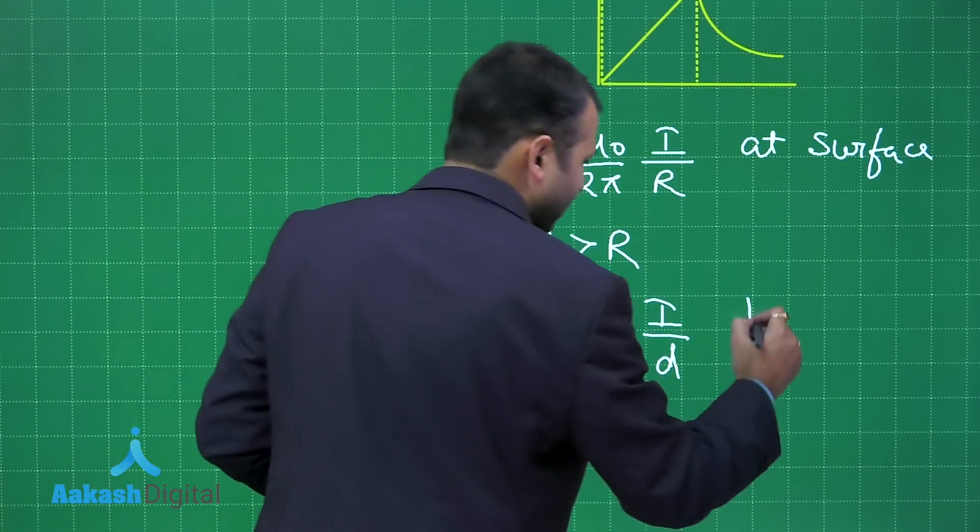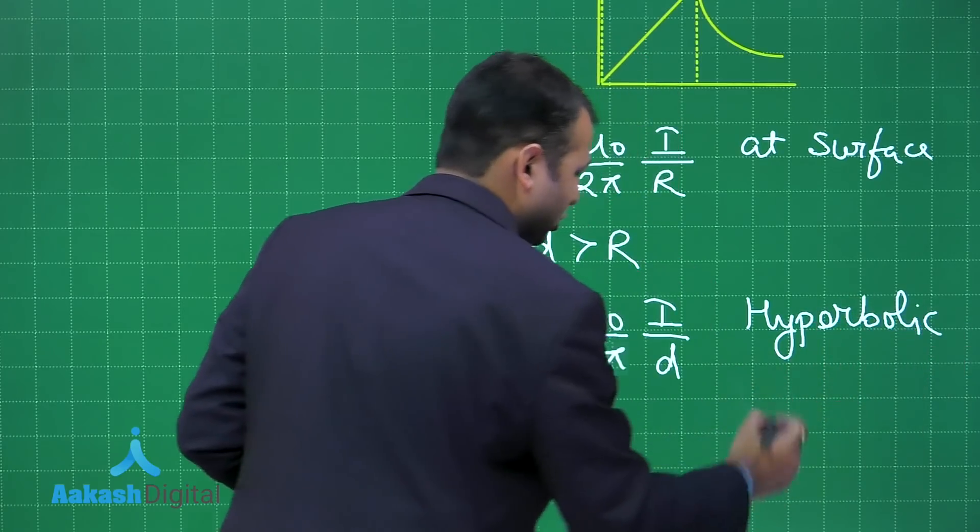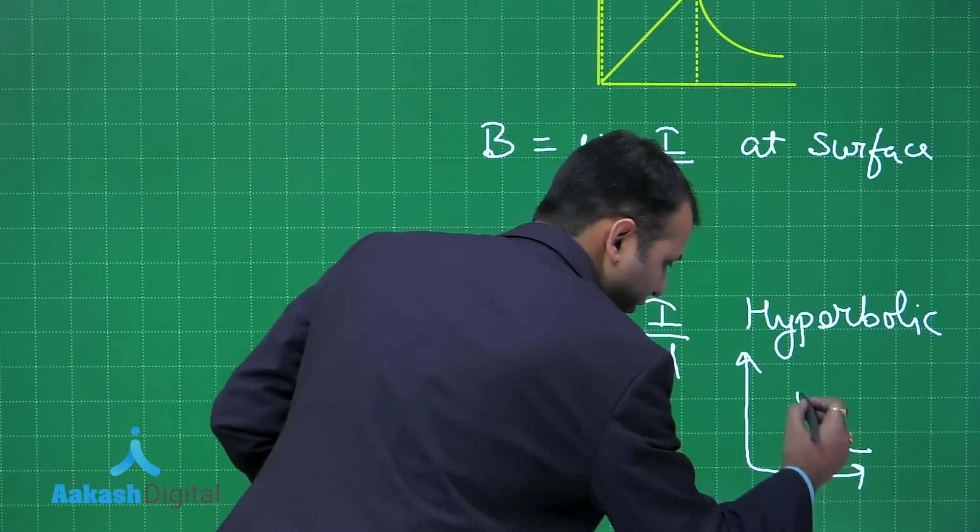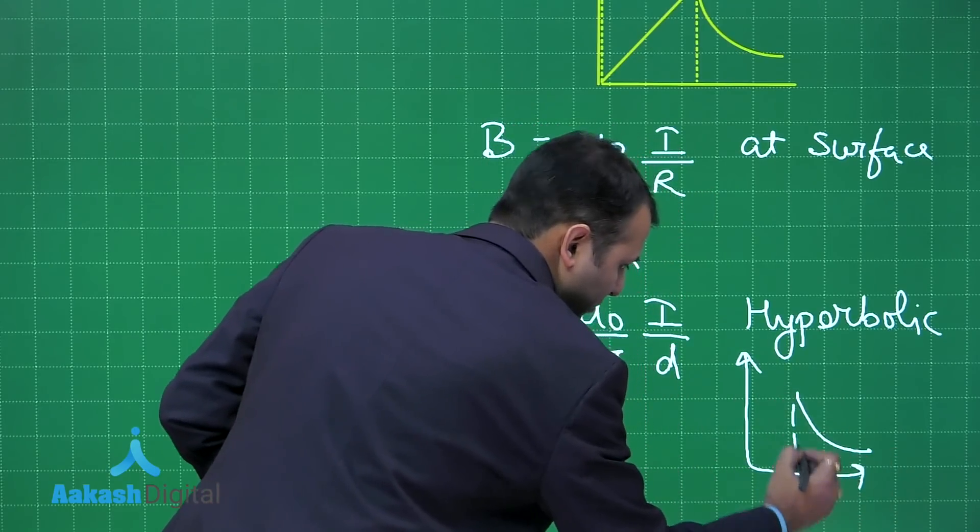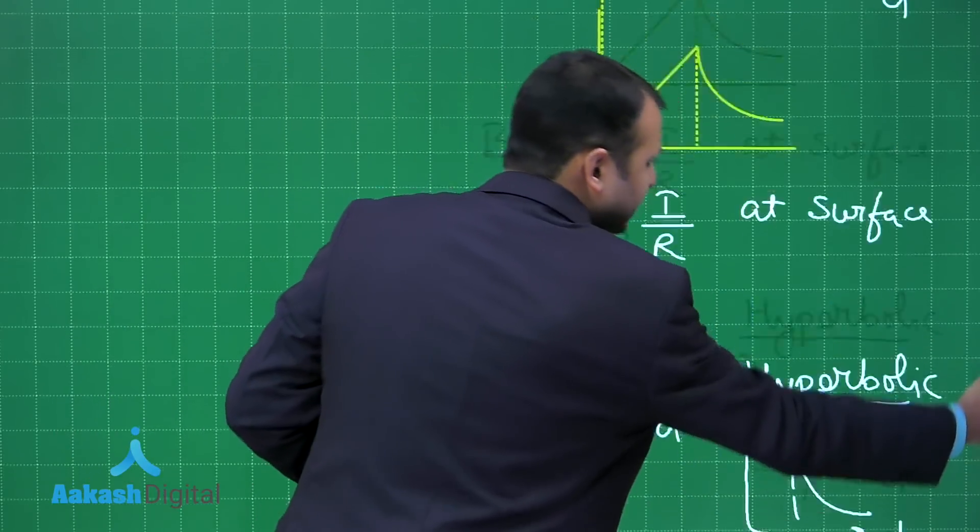So if I draw the case for this one, I will get something like this. Then you start from R. After this R portion. This is B and D's relation. So when you see all these things, you can find the variation exactly. This is B, this is the D distance, this is the R.